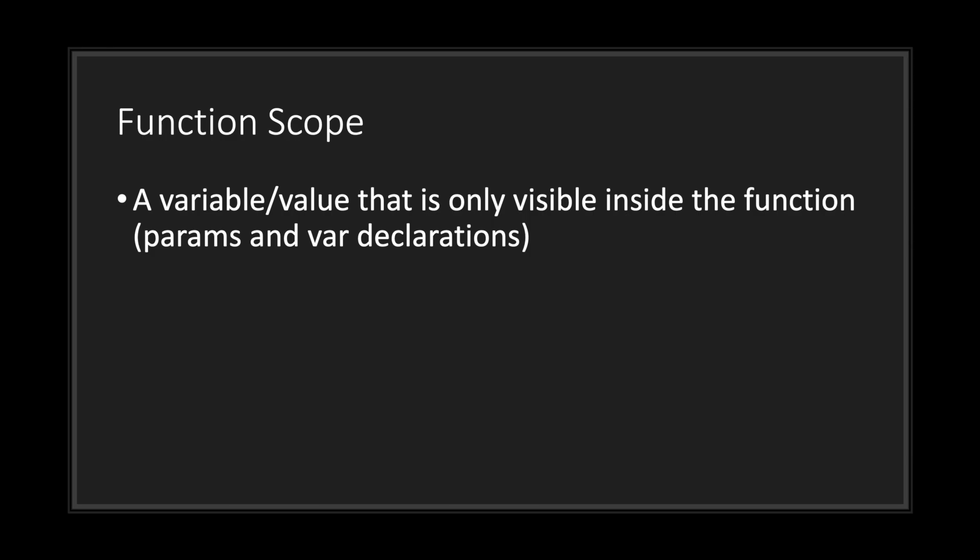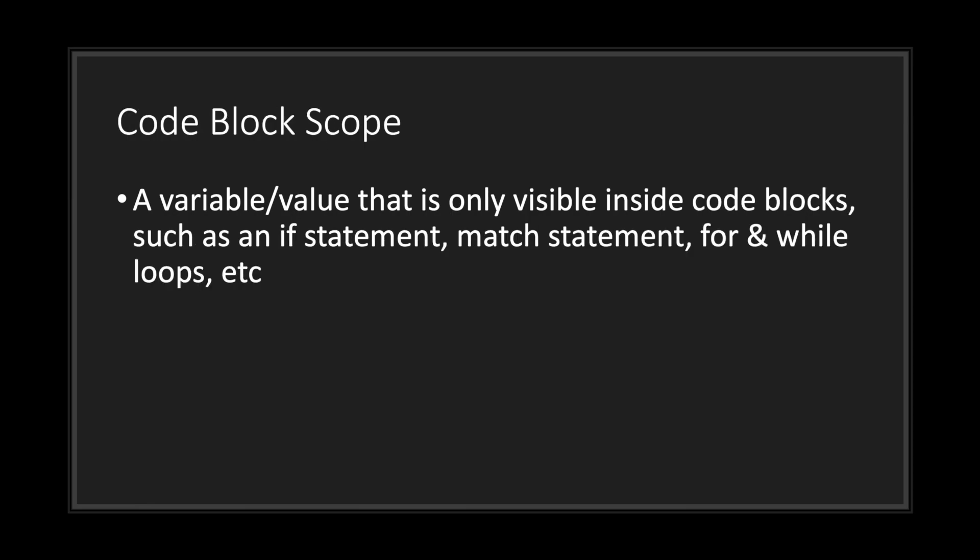The function scope is basically a variable or value that is only visible inside the function that it is declared in. These would include parameters and variable declarations. Lastly, you have your code block scope — a variable or value that is only visible inside code blocks, such as variables declared in your if statements and while loops, and of course variables that come prepackaged in your match statements and for loops.